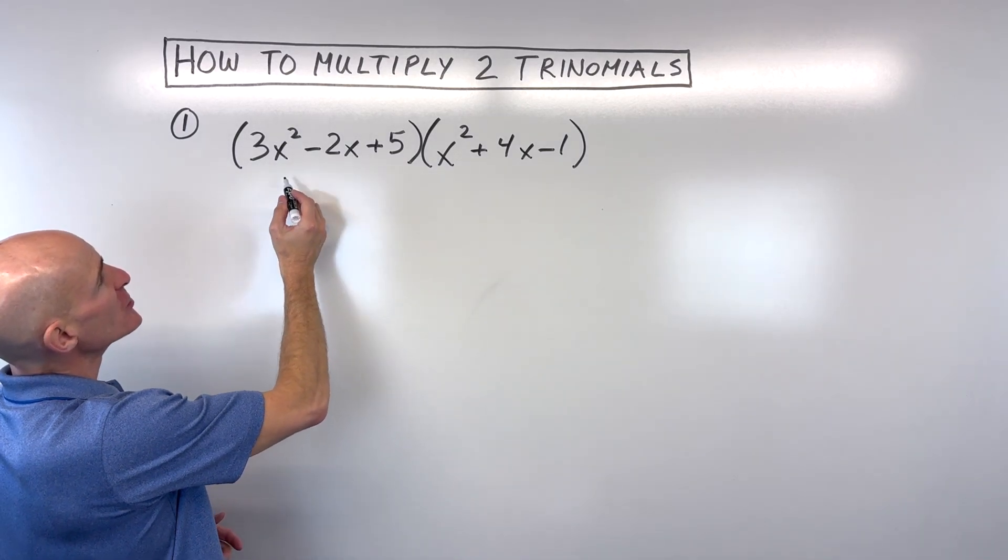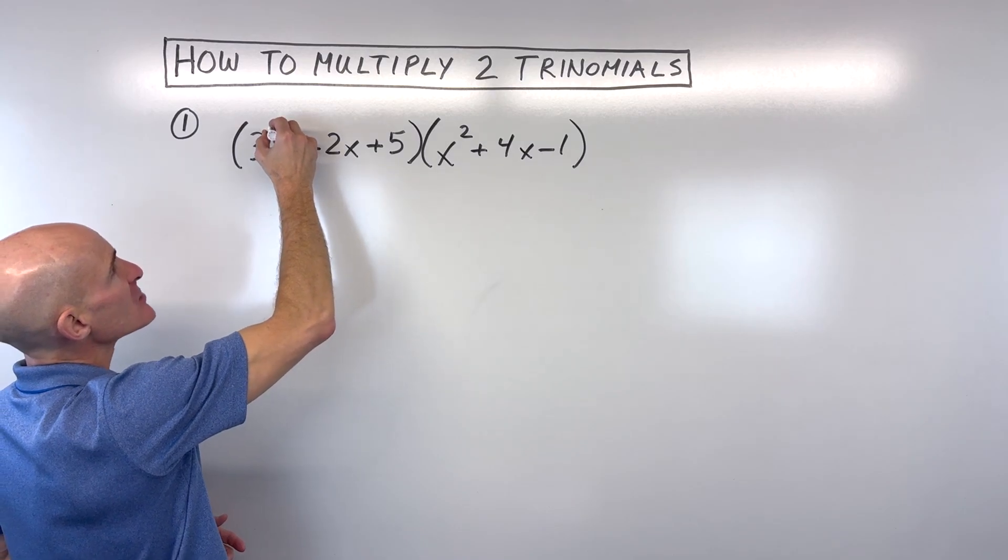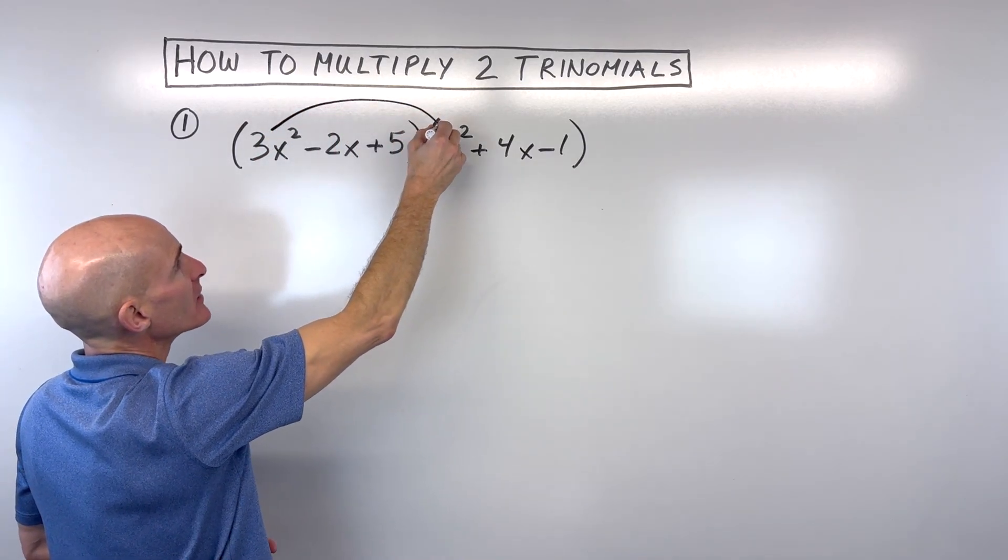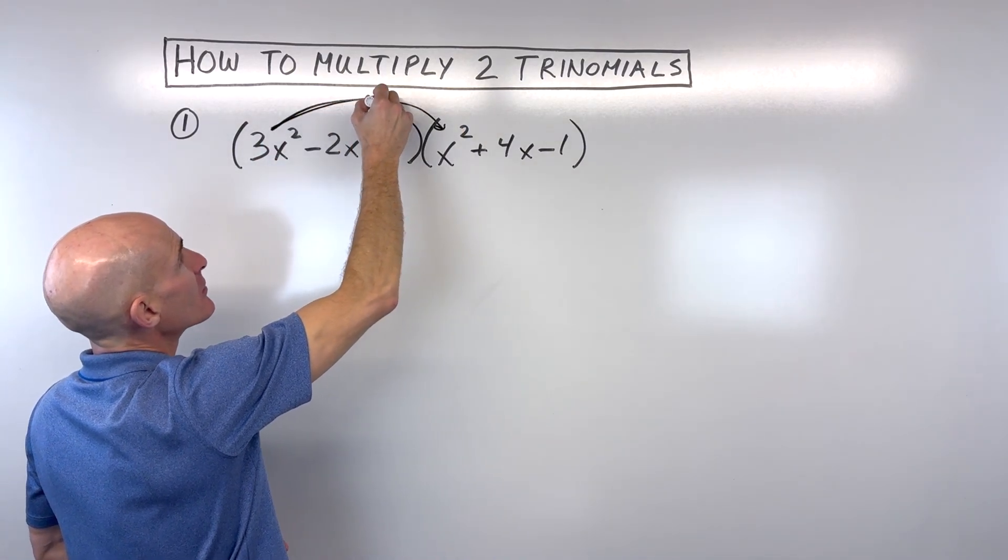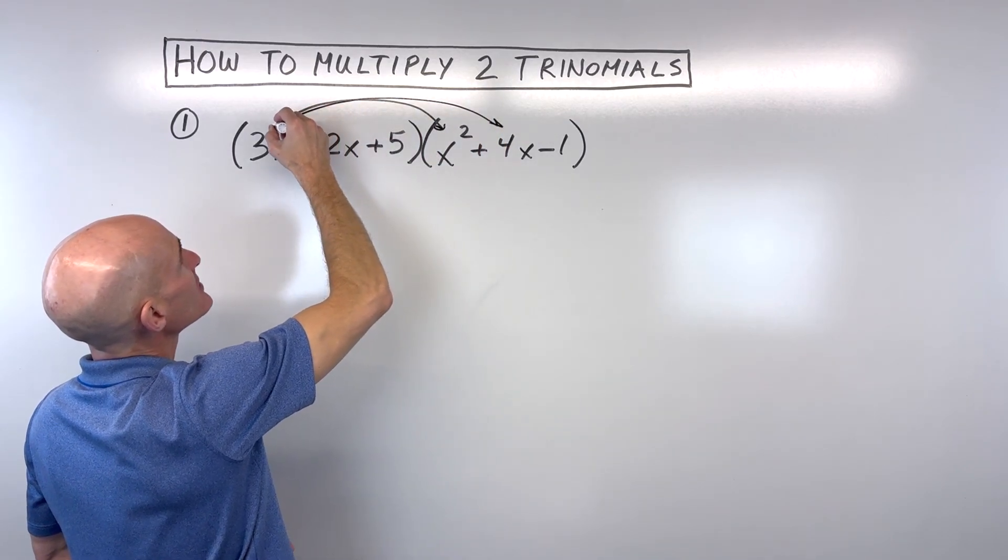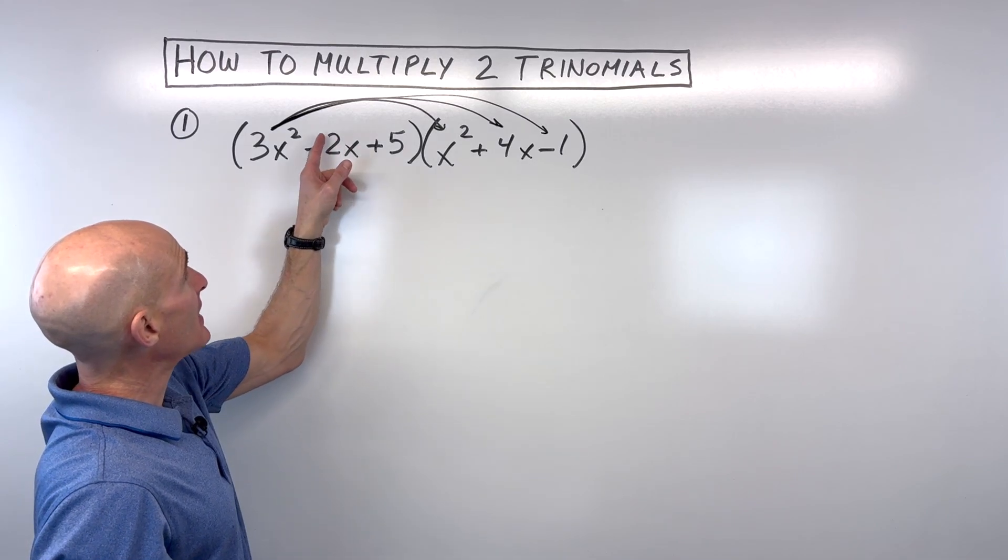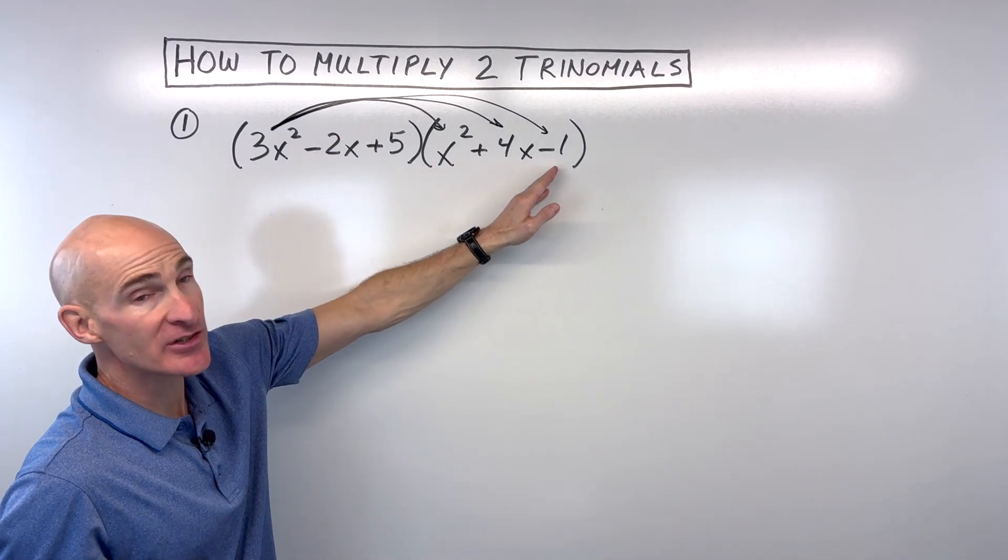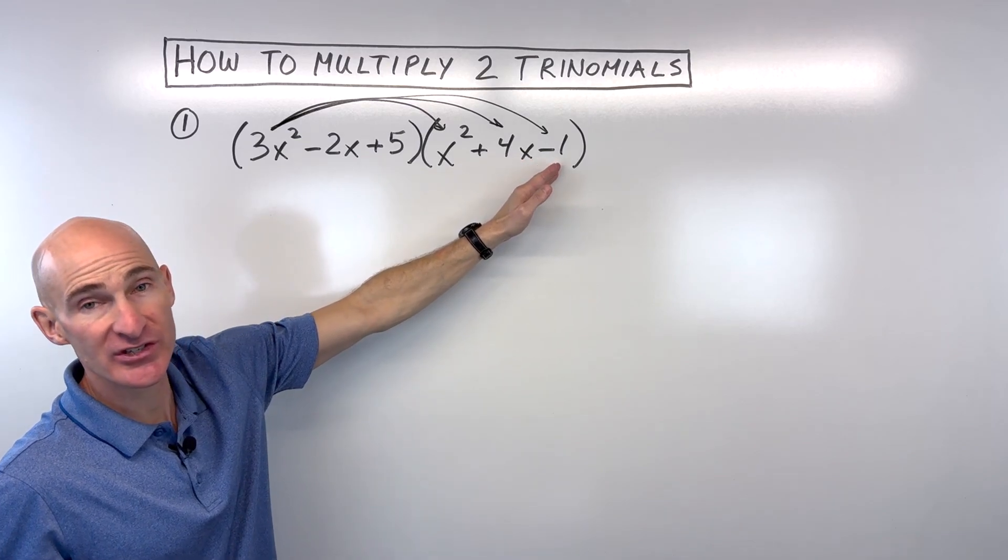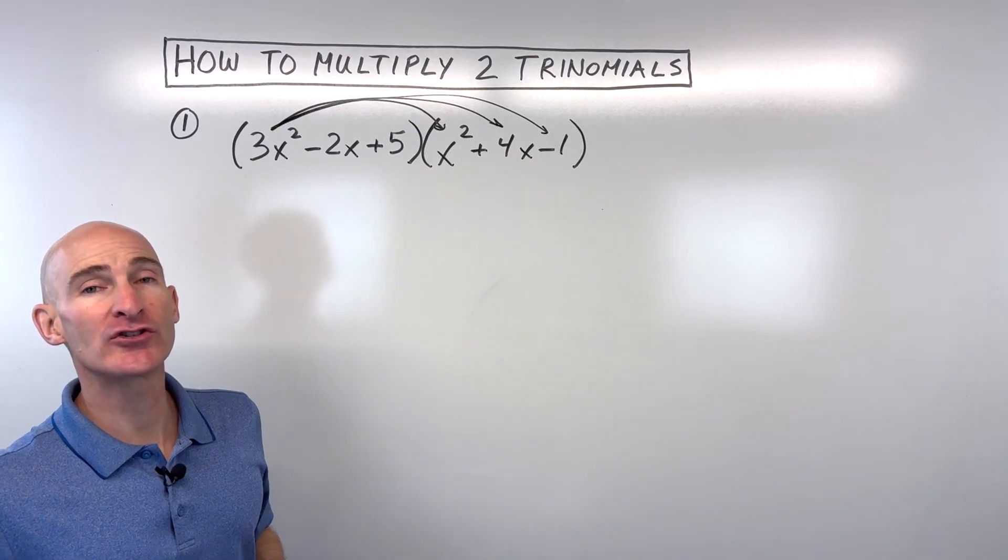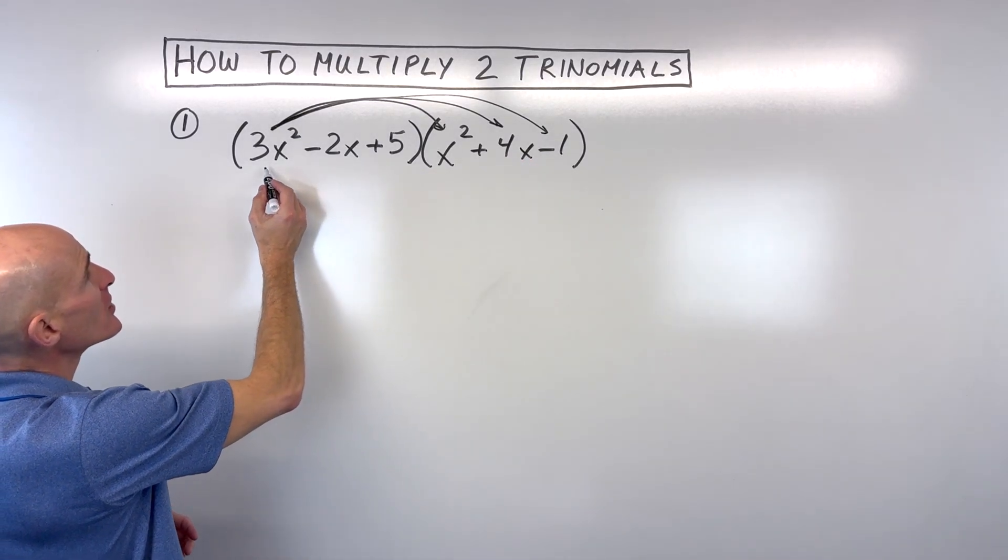Well, it's basically like doing the distributive property three times. So we're going to take 3x squared times x squared, 3x squared times 4x, 3x squared times negative 1. Then we're going to take negative 2x times all three of these terms. And then we're going to take 5 times all three of these terms. Then we're going to combine all the like terms together. So let's go ahead and do that.